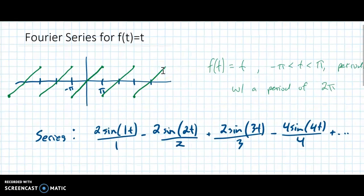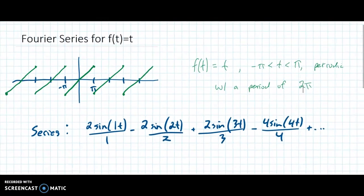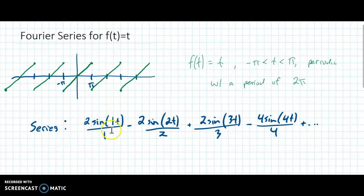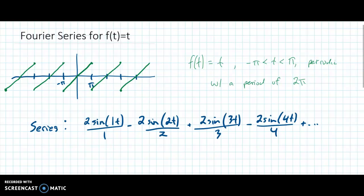This is the example that I used in one of my earlier videos. In that earlier video, I just pulled this series out of nowhere. It said 2 sine of 1t over 1, minus 2 sine of 2t over 2, plus 2 sine of 3t over 3 — this should be a 2 — plus 2 sine of 4t over 4. It's just this number here matches that number. I'm going to show you a formula, and then I'm going to show you how we get this thing.